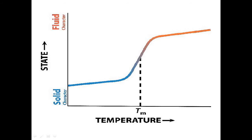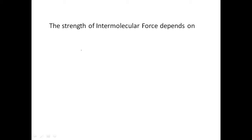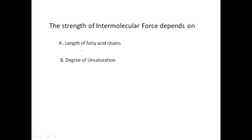The temperature at which this transition begins — from solid to fluid state — is known as TM, or transition temperature. TM is the temperature at which the transition from solid to fluid character occurs. The strength of intermolecular forces plays a major role and depends on several factors: the length of fatty acid chains, the degree of unsaturation, and the concentration of cholesterol. These three factors affect intermolecular force strength, which in turn determines membrane fluidity.